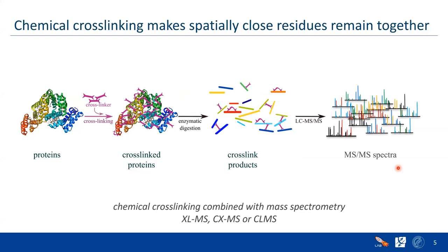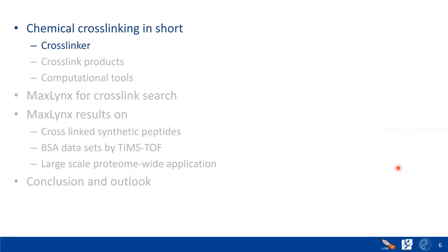Because of adding the cross-linking, the products are more complex than the typical experiment, and as a result, the spectra are also a bit more complex. This field is generally called chemical cross-linking combined with mass spectrometry, and you will see several abbreviations in the field. My outline for this talk: I will briefly discuss cross-linkers, then cross-link products, and then introduce some computational aspects of how we can analyze mass spectra data.